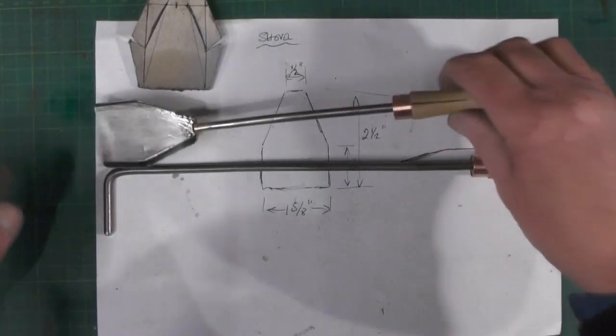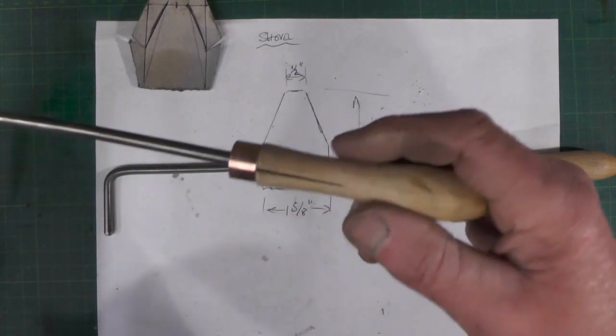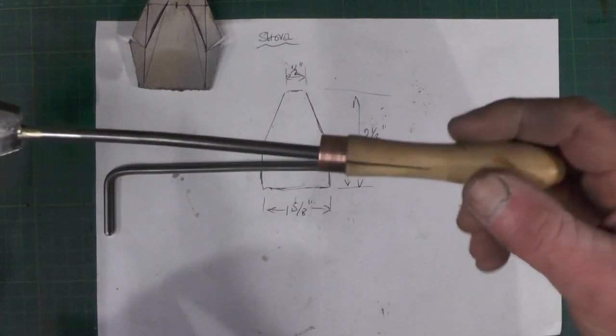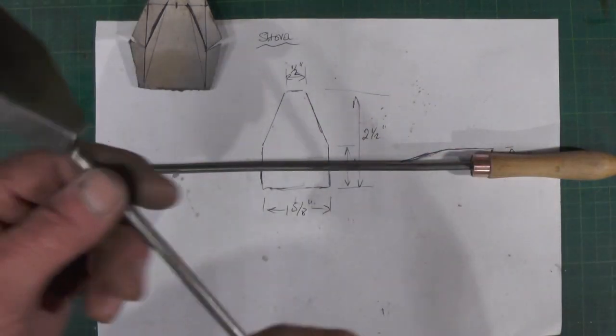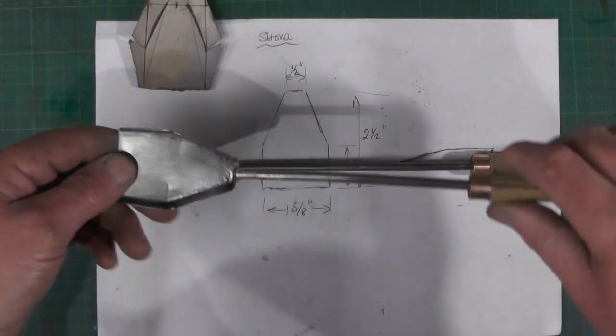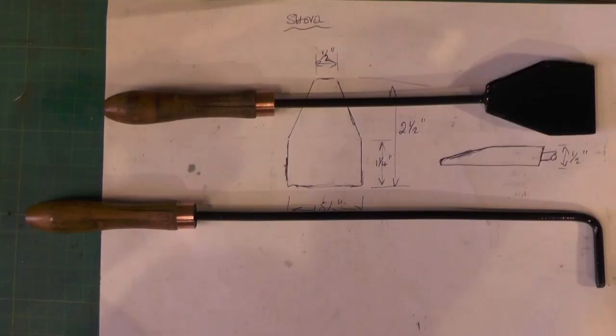There you go then, that was only a minute's job just to knock them on. I think what I'll do, I'll just probably give them a coat of black paint just to finish them off. So that's another part of the job done.